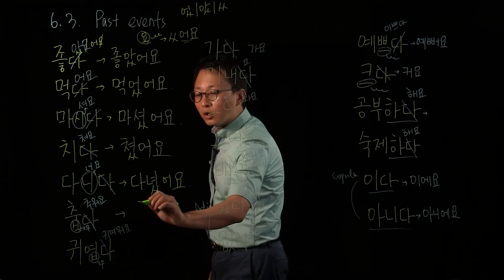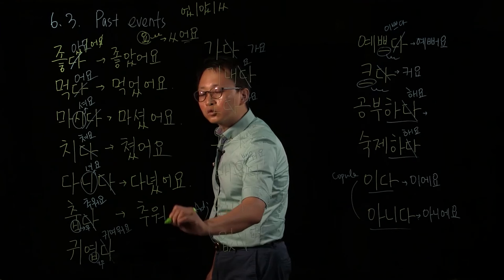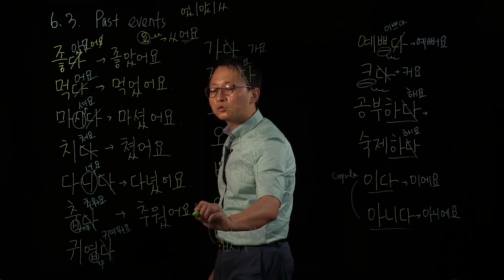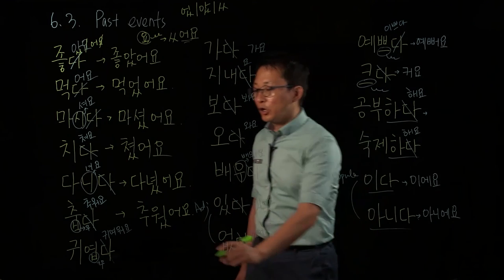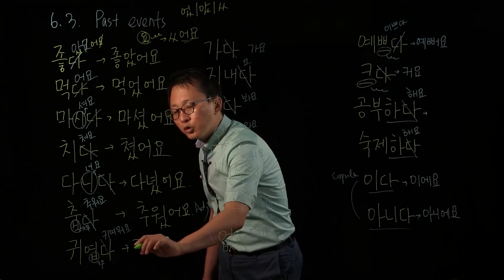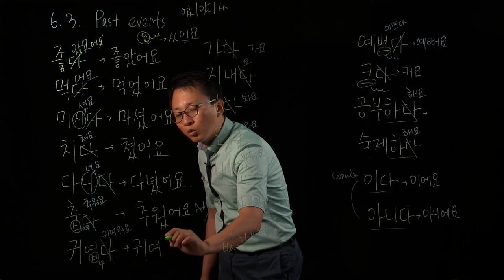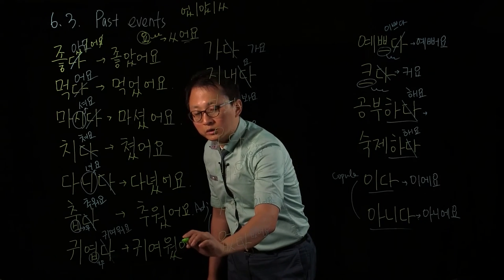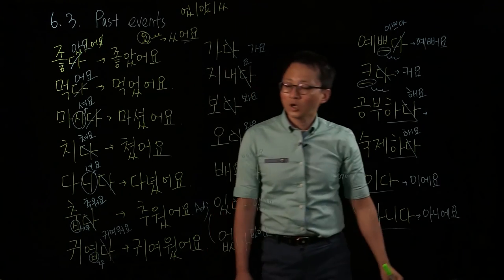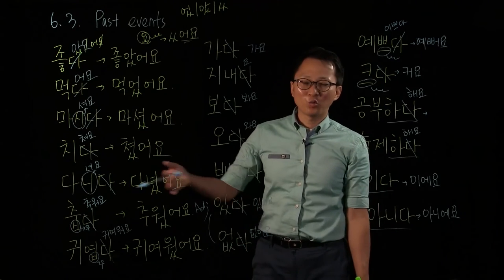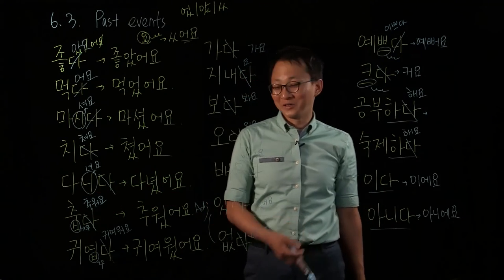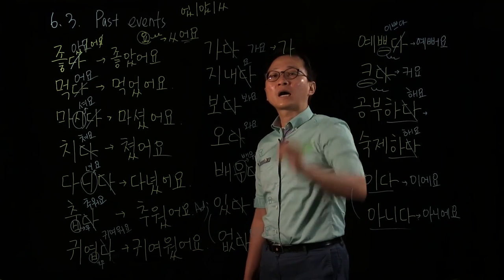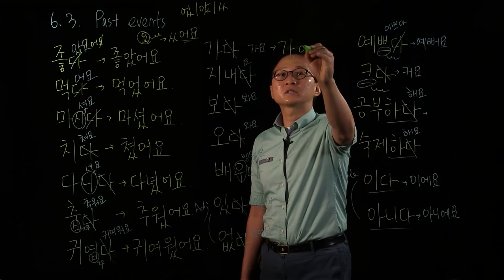춥다 — 추워요 is the present form. Take out 요: 추워. Add ㅆ어요: 추웠어요. It was cold. 귀여워요 — 귀여워. Add ㅆ어요: 귀여웠어요. Somebody used to be cute, not anymore! 귀여웠어요 — 그런데 지금은 아니에요. 가요 — 가. Add ㅆ어요: 갔어요. Remember — always 어요. 좋았어요, 먹었어요, 마셨어요, 다녔어요, 추웠어요, 귀여웠어요.